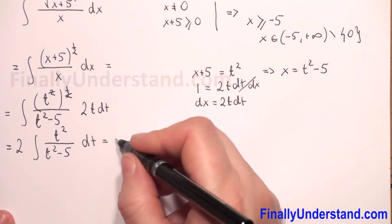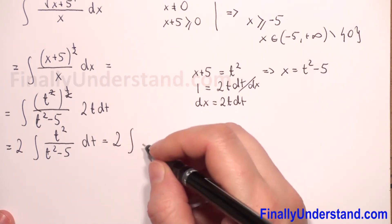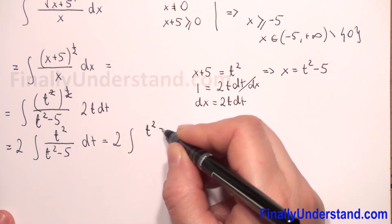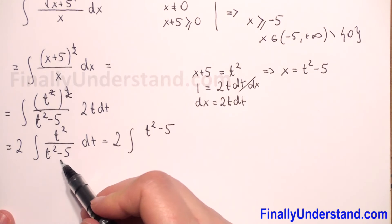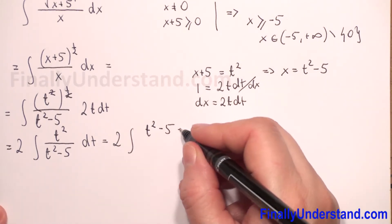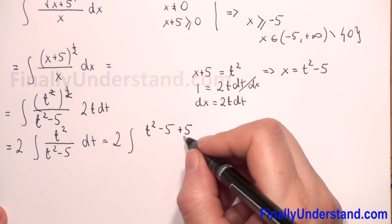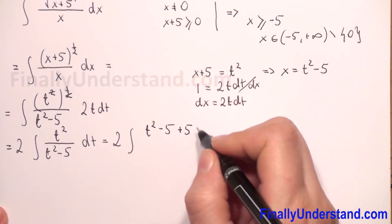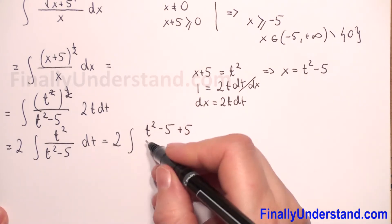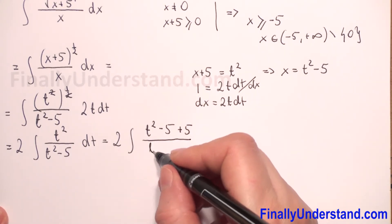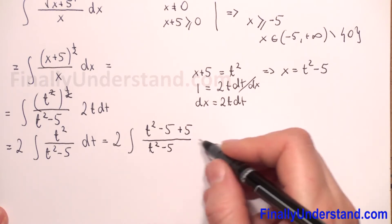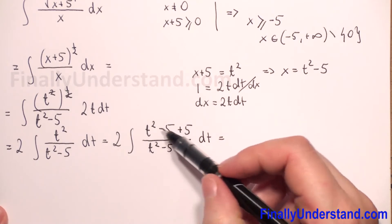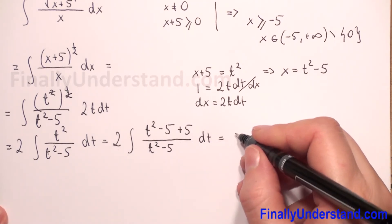I will rewrite our integral by expressing the numerator in the form t squared minus 5 plus 5, because t squared minus 5 appears in the denominator. I add 5 because we need a constant — negative 5 plus 5 equals 0, so everything is consistent. We still have t squared over t squared minus 5 in the denominator.